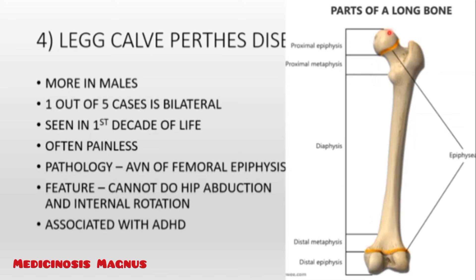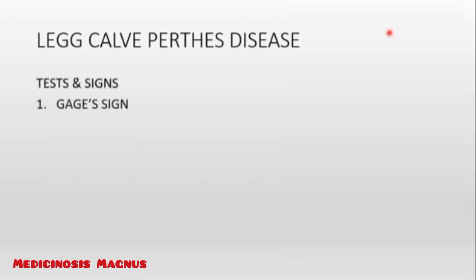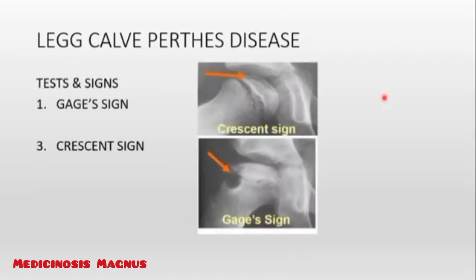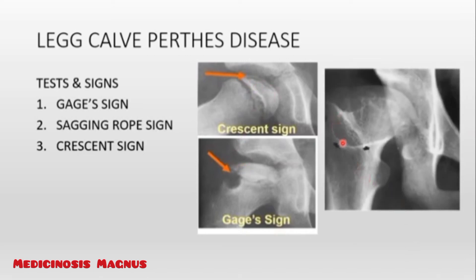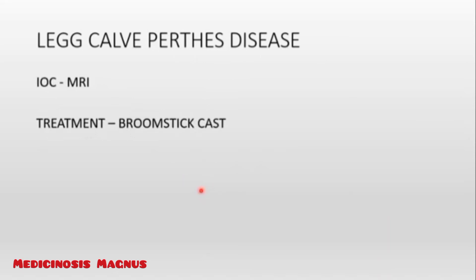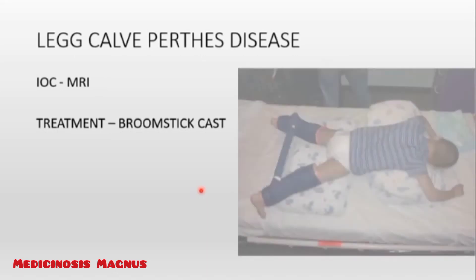Due to avascular necrosis of the femoral epiphysis, the femoral head cannot fit into the acetabulum, so the hip bone slips away and the patient cannot do abduction or internal rotation. Signs include the gage sign (a part appears chopped off), crescent sign (crescent-shaped thickening due to avascular necrosis), sagging rope sign, and fragmentation sign (a part being fragmented out). The investigation of choice is MRI, and treatment is a broomstick cast to abduct the leg.